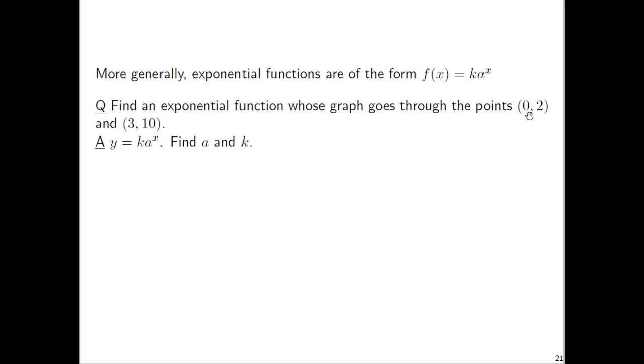Let's use first of all the point 0, 2 because there's a 0 there. This is going to be nice plugging in 0 for x and 2 for y we're going to have 2 equals k times a to the 0. Now a to the 0, raising something to the 0th power, a to the 0 is 1 so k times 1 so you have 2 equals k or k equals 2.